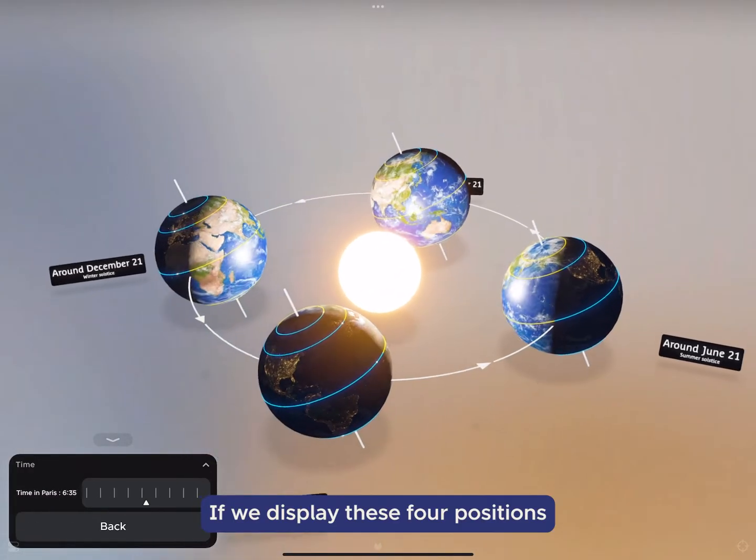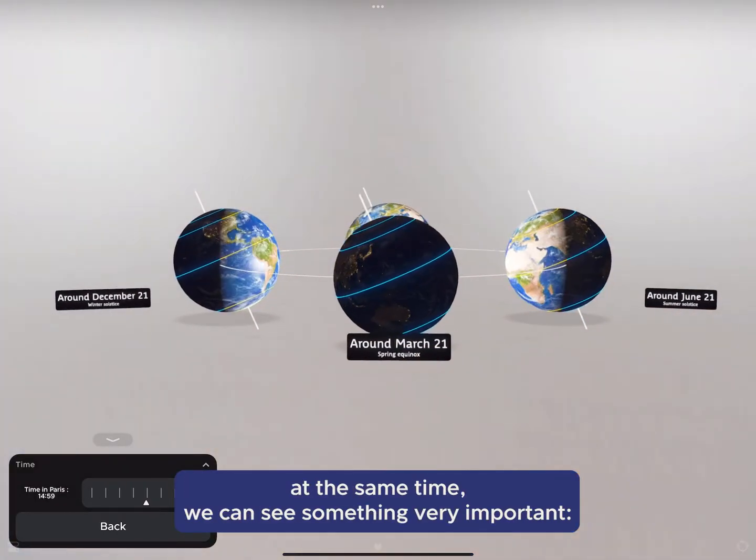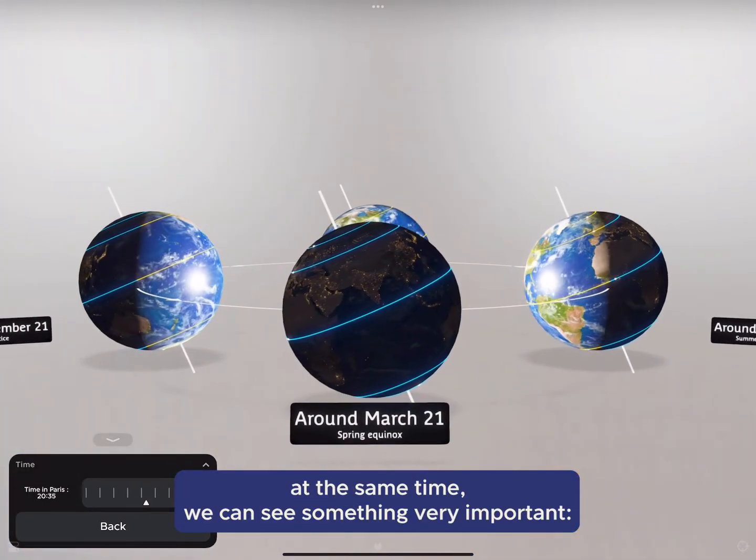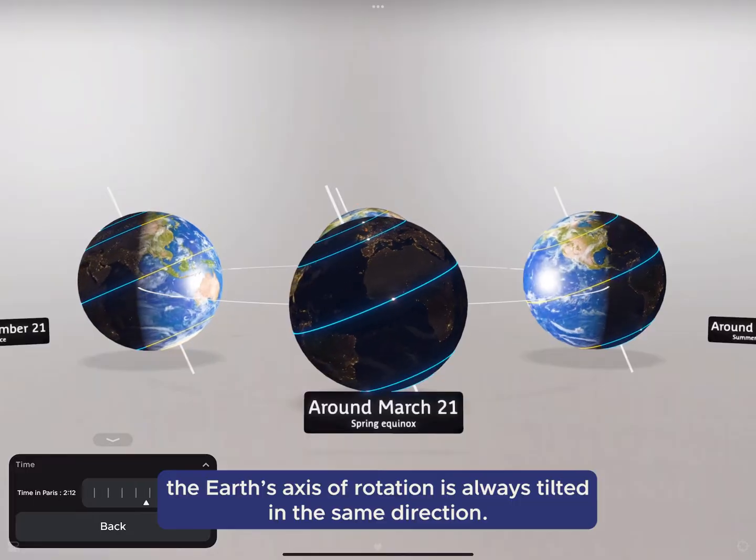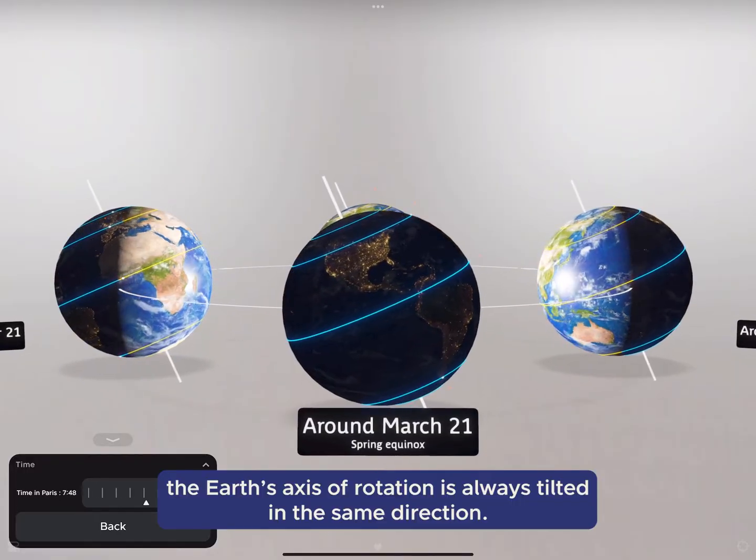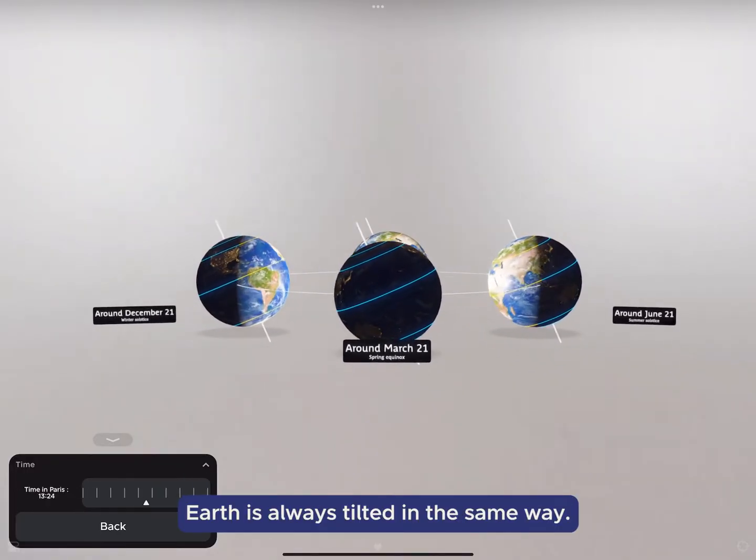If we display these four positions at the same time, we can see something very important. The Earth's axis of rotation is always tilted in the same direction. The Earth is always tilted in the same way.